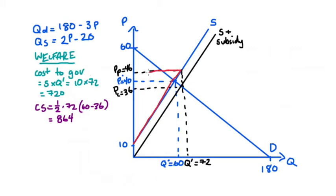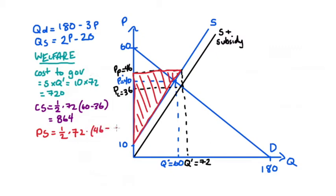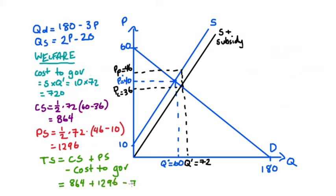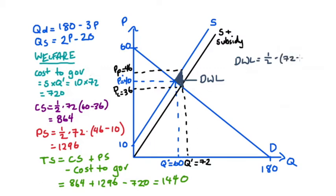Producer surplus is the area above the supply curve below PP: PS = ½ × 72 × (46 − 10) = ½ × 72 × 36 = 1,296. Total surplus = CS + PS − government cost = 864 + 1,296 − 720 = 1,440. Deadweight loss is the small triangle with base (72 − 60) = 12 and height 10: DWL = ½ × 12 × 10 = 60.